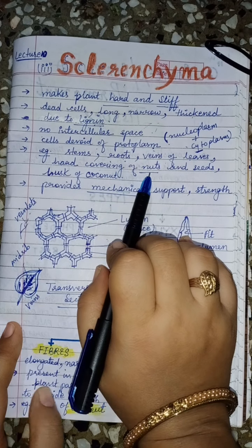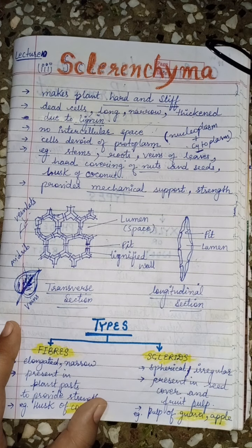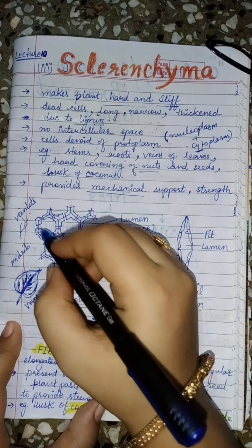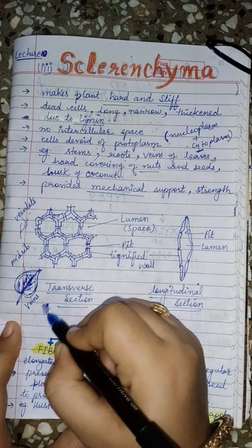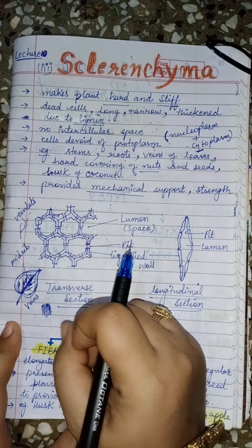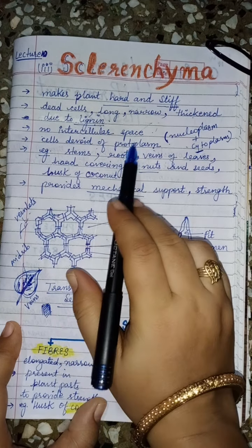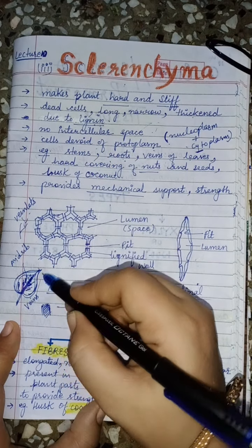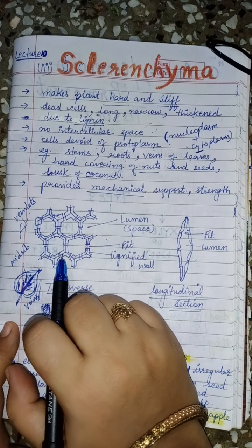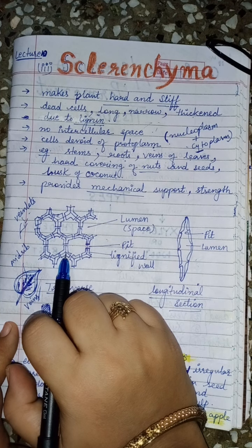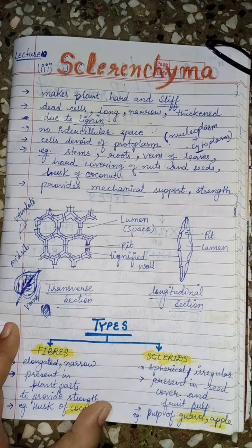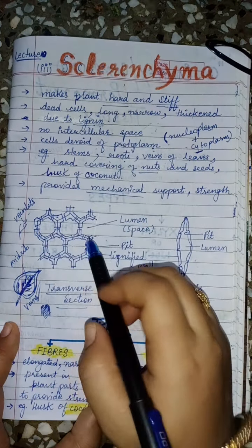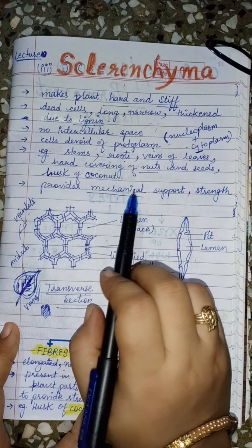Sclerenchyma is also found in the hard covering of nuts — like peanuts or walnuts — whose coverings are tough, tricky structures. The husk of coconut — the hair-like brownish structures on top of the coconut — is also made of dead sclerenchyma cells. So these are all examples of dead tissues forming sclerenchyma.